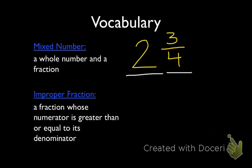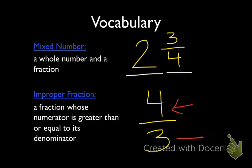An improper fraction is a fraction whose numerator is greater than or equal to its denominator. So for example, 4 thirds. In this example, the numerator is 4 and the denominator is 3. Because 4 is greater than 3, this would be an improper fraction.